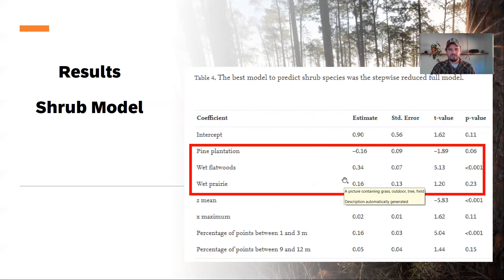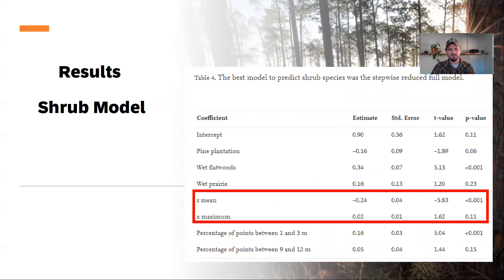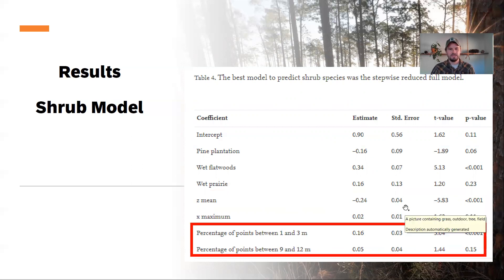Here again in the shrub model, the natural community type was important, as well as the Z mean, or the height mean, and X max, so how far points could go out from the center of the plot, was important to the shrub diversity with a positive effect and a negative effect from the Z mean height. So the lower the Z mean, the better effect on the shrub richness. And then also we have some LiDAR metrics here, which make a lot of sense in the strata column. So the strata between one and three meters and strata between nine to twelve meters that we know are very important and probably overall shrub diversity were both had a positive effect on the model. Really a significant effect here, one to three, that area with the most shrub species.